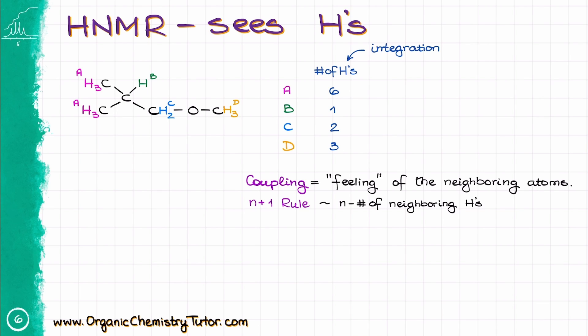and then we are going to use the N plus 1 rule to find the number of peaks in each signal. Honestly, it's easier to explain with an example. The group A in this case only has one neighbor, that is our group B. In turn, group B sees both A and C,